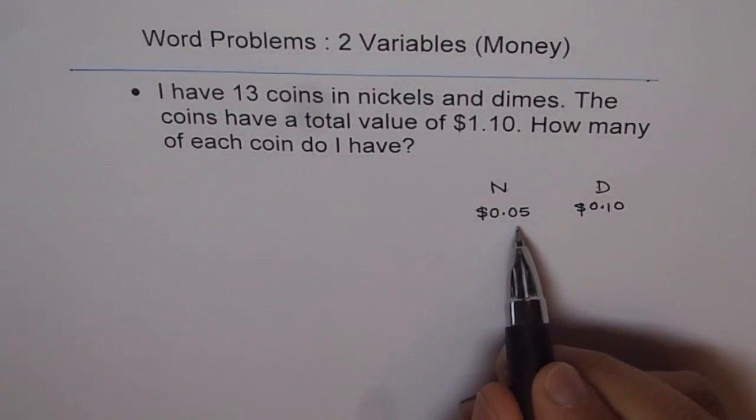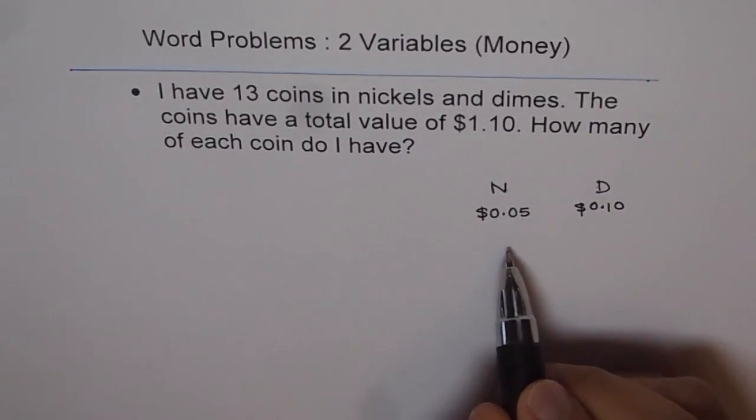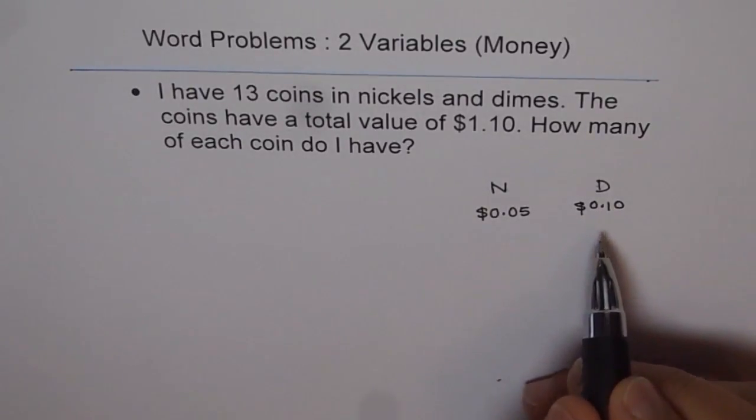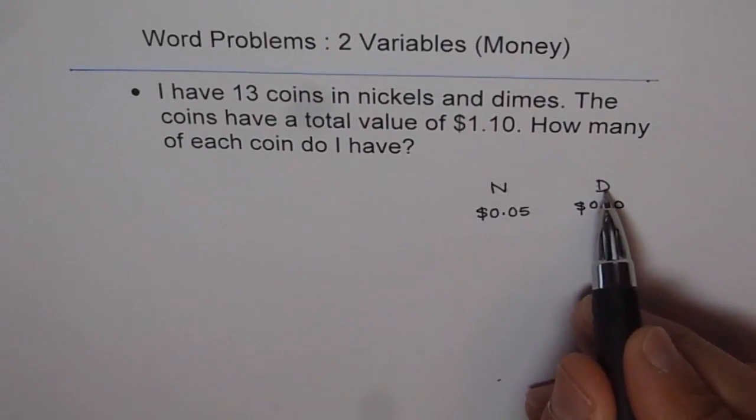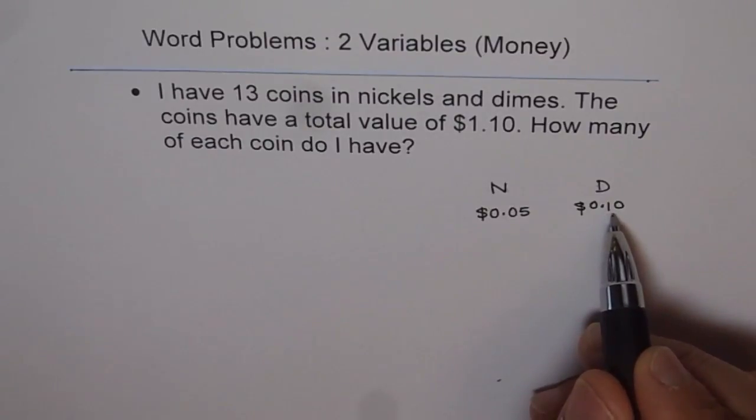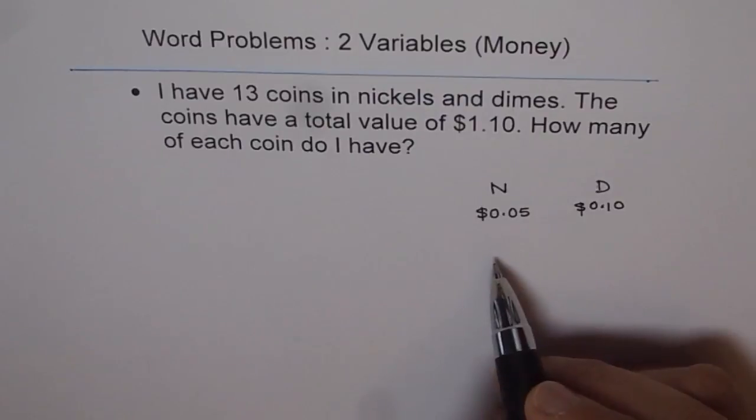So value of a nickel is 5 cents and that of dimes is 10 cents. So if you have 5 dimes, it means 5 times 10 cents, 50 cents. If you have 7, then 7 times 10. If you have d number of dimes, then it will be d times 0.1. Same is the case with nickels. If you have 10 nickels, then the value will be 10 times 0.05.